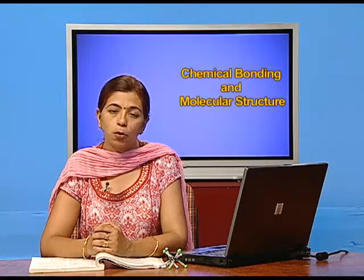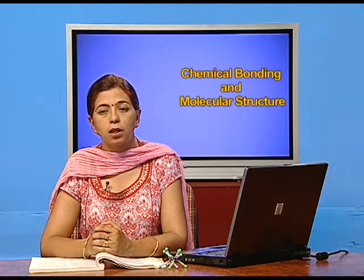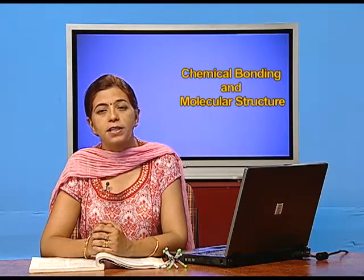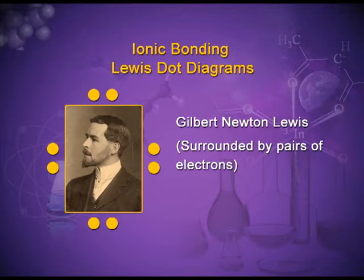Kossel and Lewis studied the nature of noble gases and concluded that noble gases do not undergo chemical combination because of their complete octet. They also inferred that only the valence electrons play a role in the formation of chemical bonding; the inner electrons do not participate. So while representing a chemical bond, Lewis gave the Lewis dot formula — Lewis symbols — in which he represented the valence electrons through dots, known as Lewis dot structures or Lewis dot symbols.